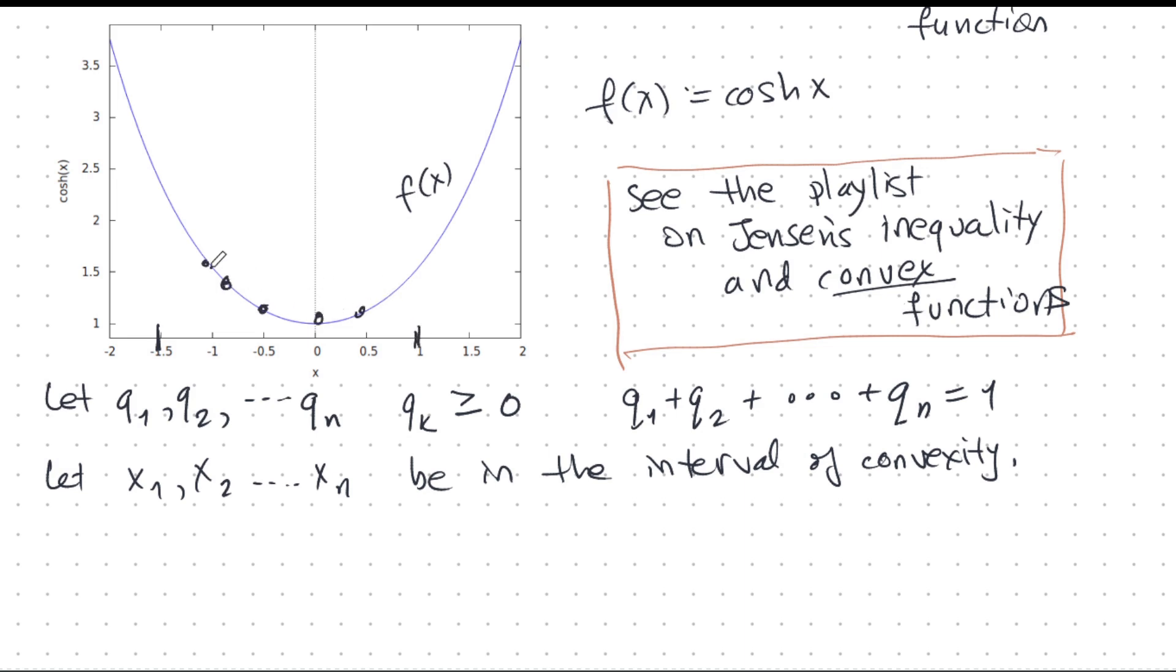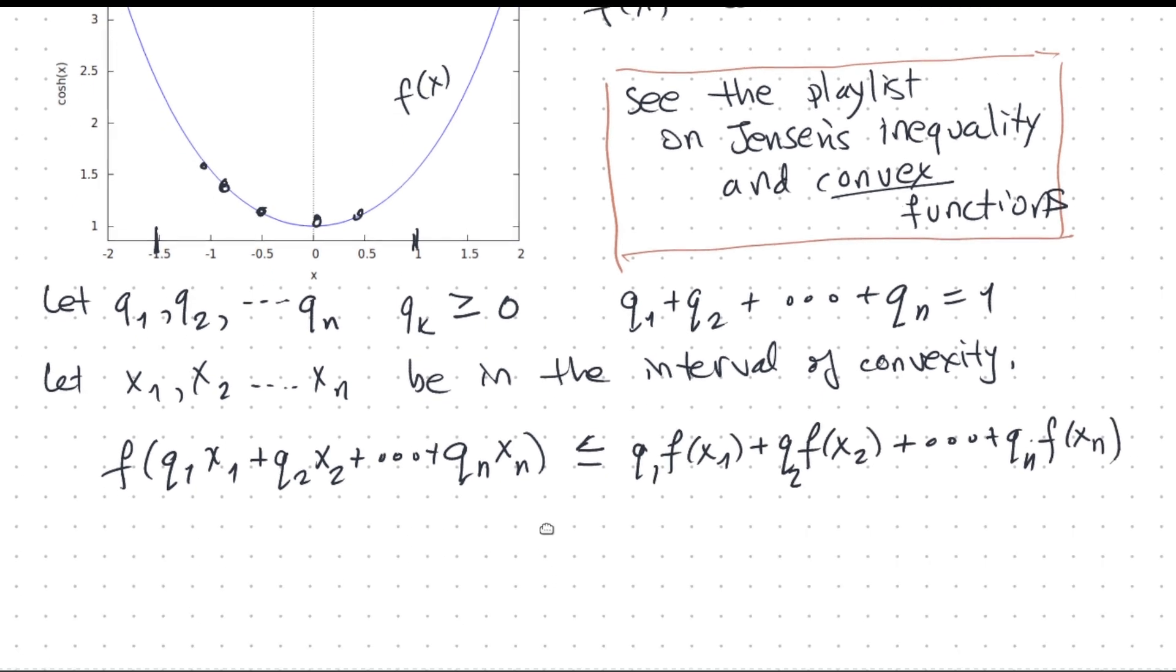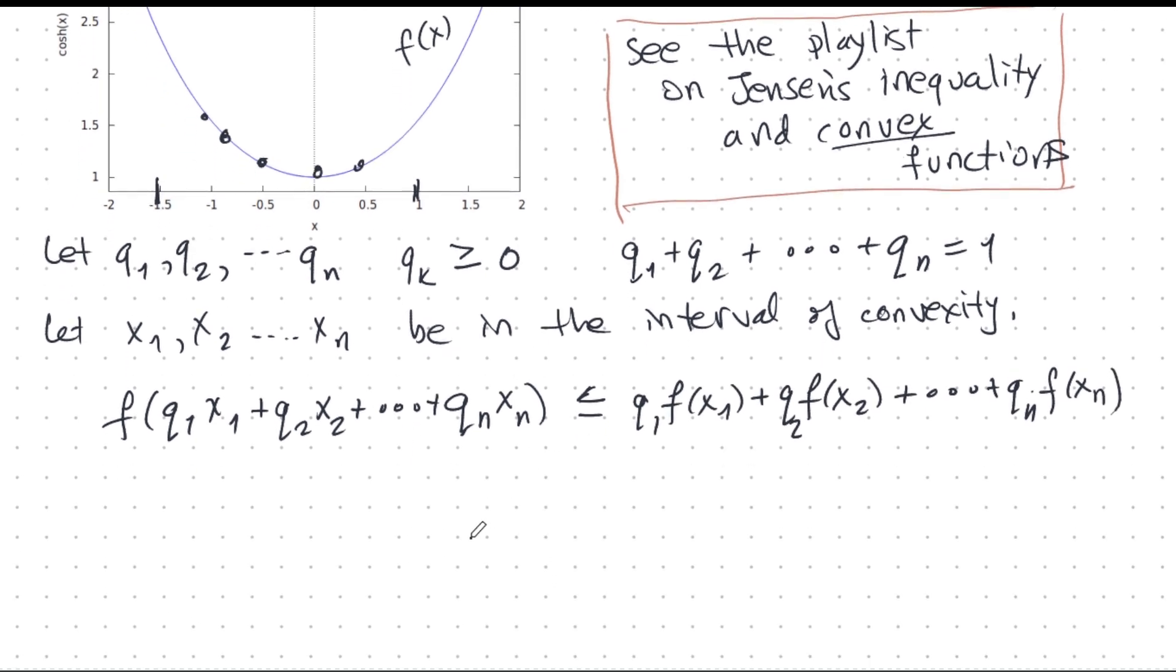So, if I have those conditions, I have, as a consequence, this amazing inequality. f of this sum is less than or equal to the following. And this, my friends, this is Jensen's inequality.